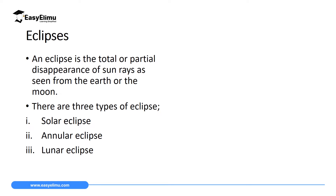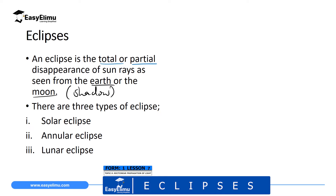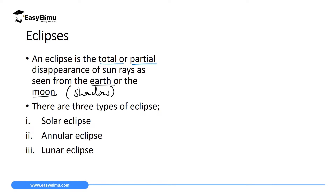So what is an eclipse? An eclipse is a total or partial disappearance of the sun's rays as seen from the moon or as seen from the Earth's surface. Remember, the moon and the Earth are opaque, and when opaque objects block the rays of light, they form a shadow. Therefore, we will not be wrong by saying an eclipse is a shadow which is formed when the Earth blocks the rays of light from reaching the Earth's surface.